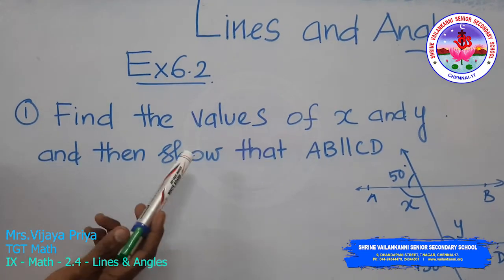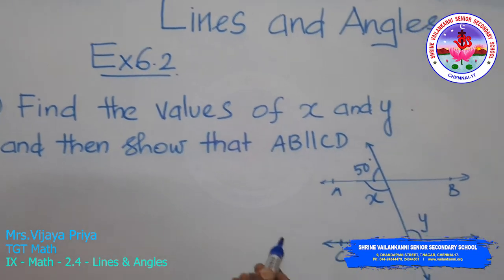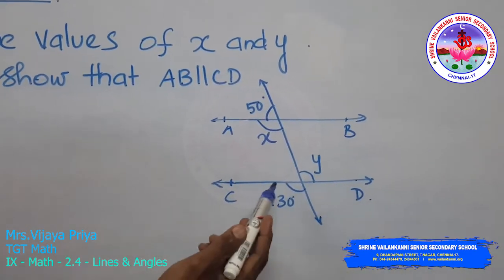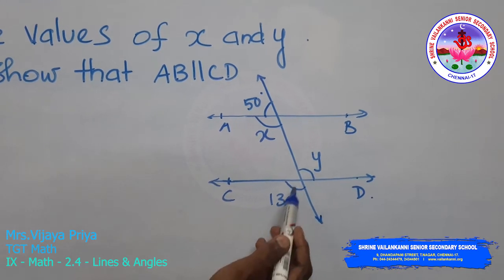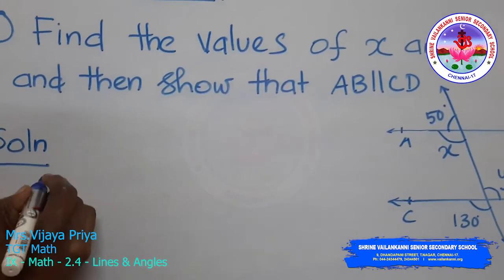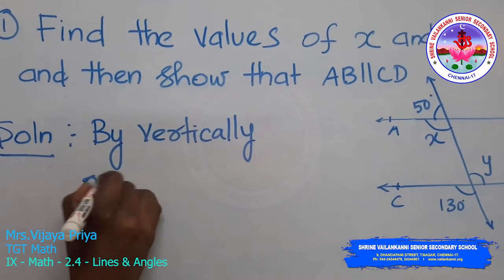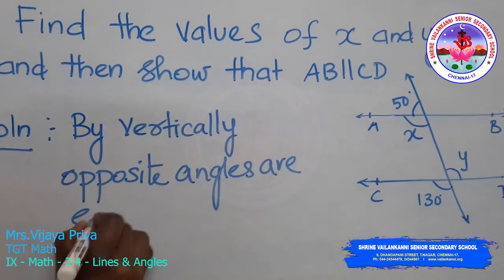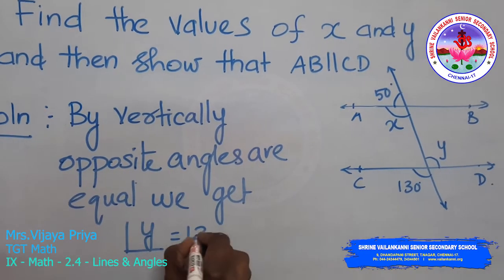The first problem: find the values of x and y, and then show that AB is parallel to CD. From the figure, we need to find the value of x and y. By seeing the figure, we know that y is vertically opposite to 130 degrees. So we use the vertically opposite angles are equal property. We get angle y is equal to 130.